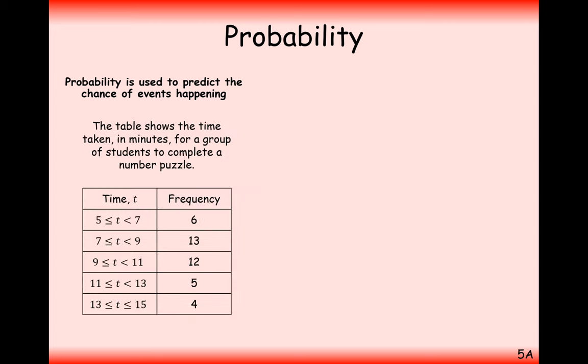If not, then maybe go and ask your teacher for help. Here we're going to move on to a different question. The table shows the time taken in minutes for a group of students to complete a number puzzle. So 6 people took between 5 and 7 minutes, 13 people took between 7 and 9 minutes and so on. Question A is to estimate the probability that a student completes the puzzle in under 9 minutes.